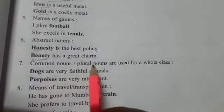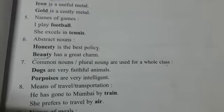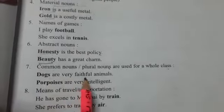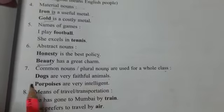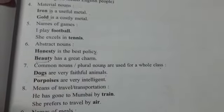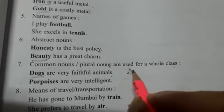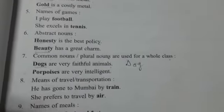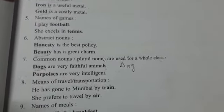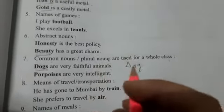Next, common nouns or plural nouns used for a whole class — unke saath jo hum full or whole class ke liye use kar rahe hain. For example, 'Dogs are very faithful animals' or 'Dog is a very faithful animal.' Here we are talking about the whole class of dogs, not any one particular dog. So no article is used.